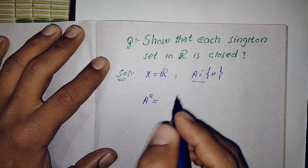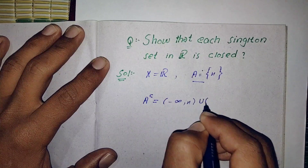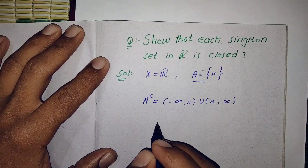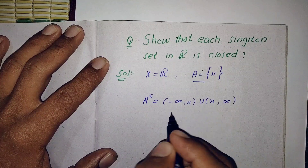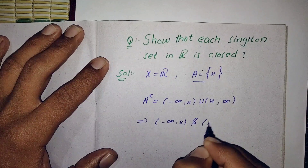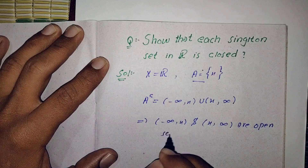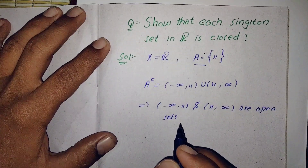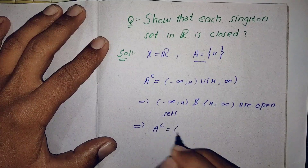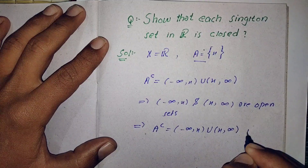A complement will be equal to (-∞, x) ∪ (x, ∞). Now since we know that each open interval is an open set, it implies that (-∞, x) and (x, ∞) are open sets. Therefore A complement = (-∞, x) ∪ (x, ∞) is open.